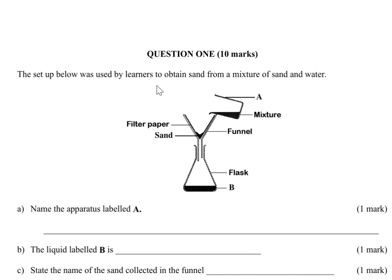The setup below was used by learners to obtain sand from a mixture of sand and water. You can see we have air, filter paper, sand, funnel, mixture, the flask, and then the part labeled B. Name the apparatus labeled A — one mark. A is called a beaker.